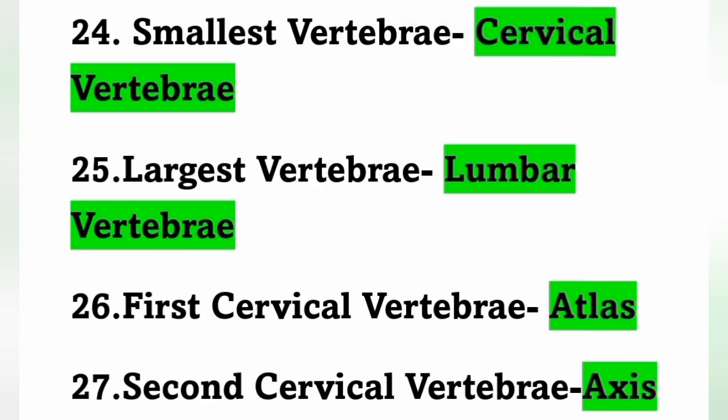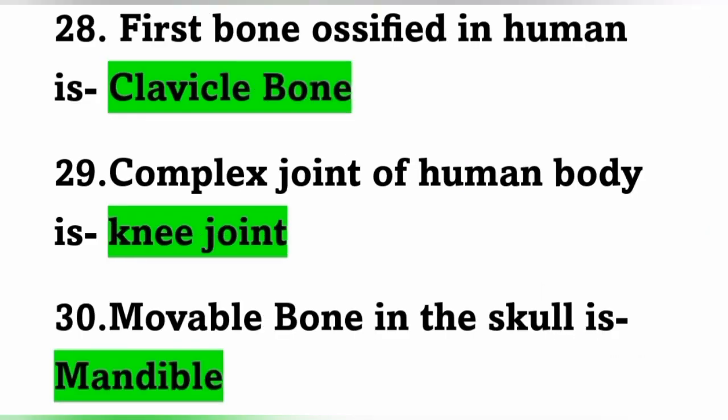Smallest vertebra is the cervical vertebra and the largest vertebra is the lumbar vertebra. The first cervical vertebra is the atlas and the second cervical vertebra is the axis. The first bone to ossify in the human body is the clavicle bone.